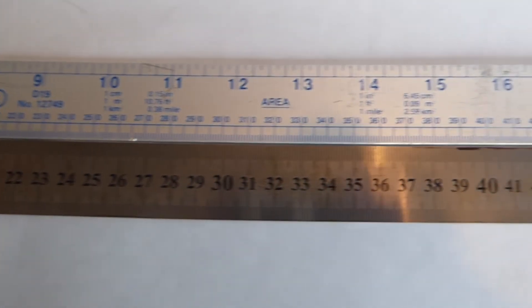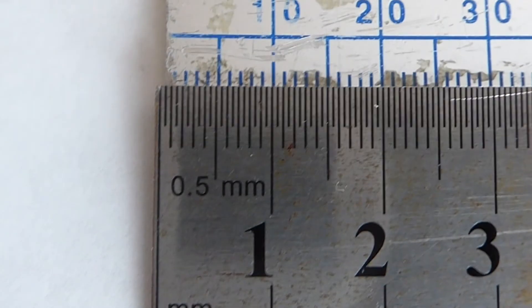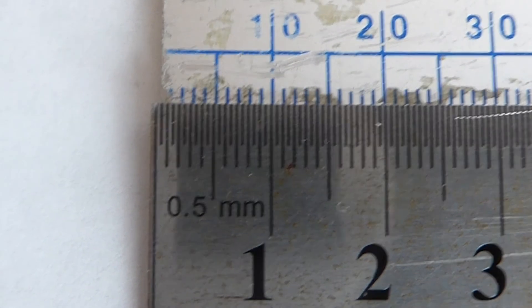Lining them up as carefully as possible at the 0-1cm mark and then looking along at the other end of the ruler, we're not absolutely sure whether the measurements match.